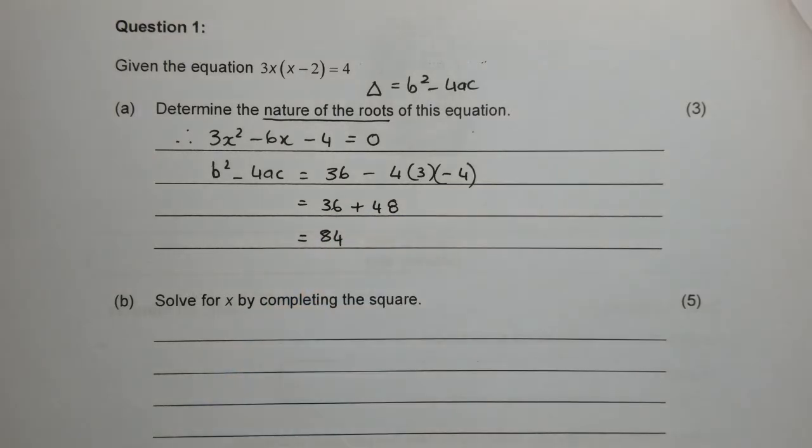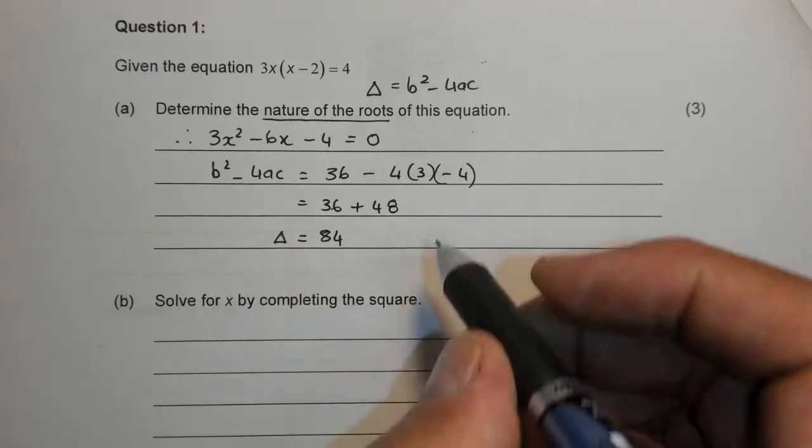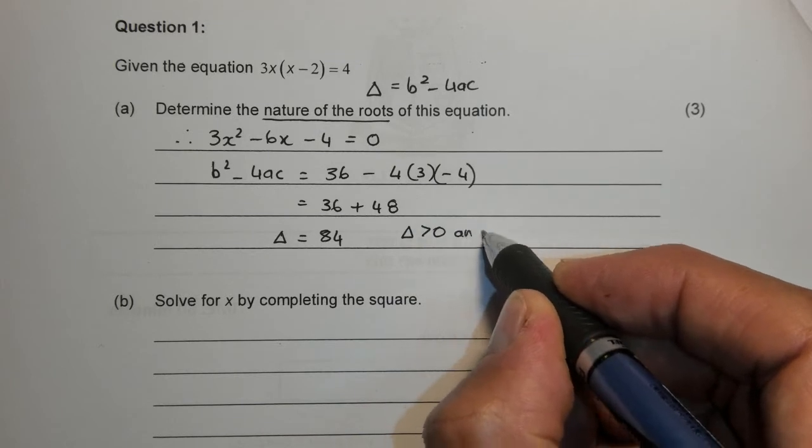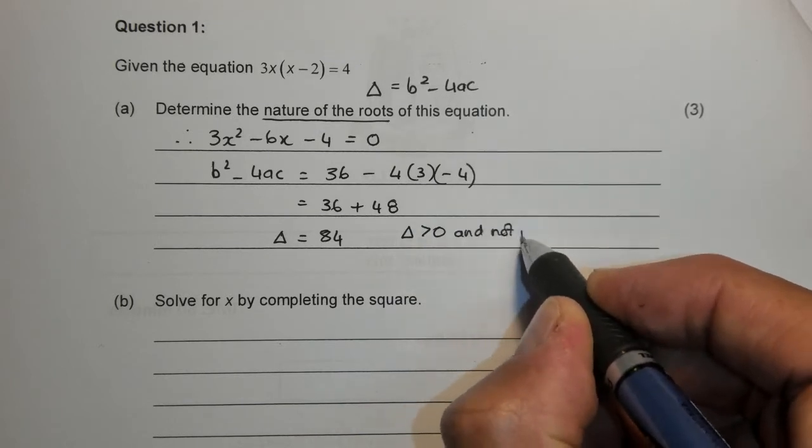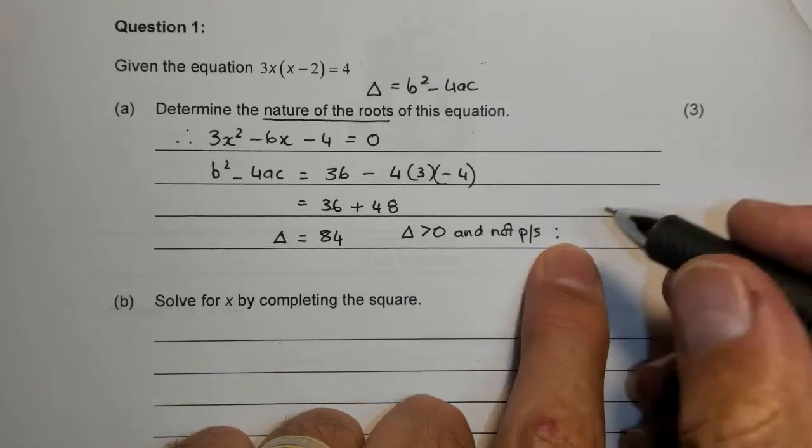Now notice that 84 is not a perfect square. So what can we say? We can say delta is bigger than 0, and it is not a perfect square. So what are the type of roots that we're going to have?